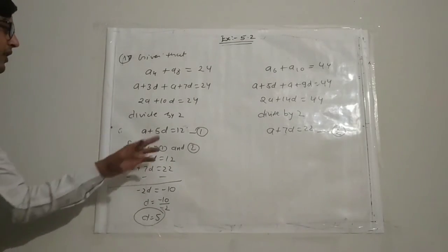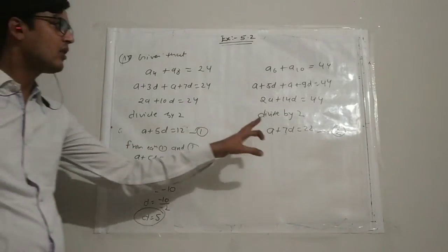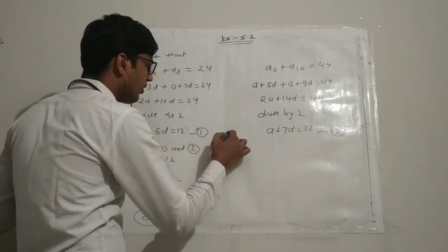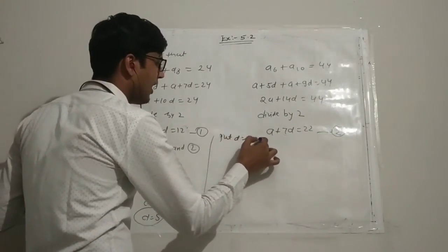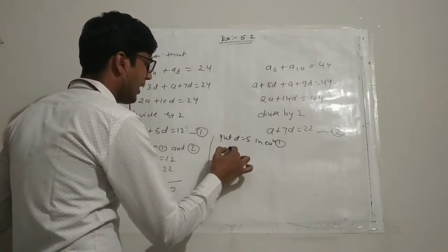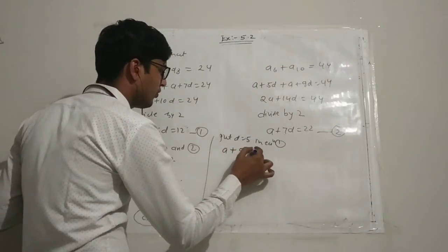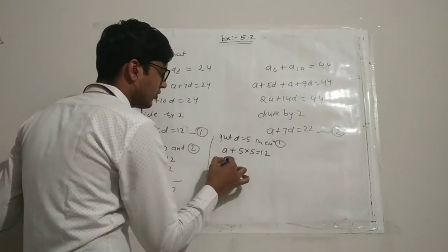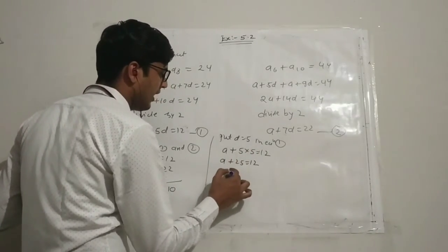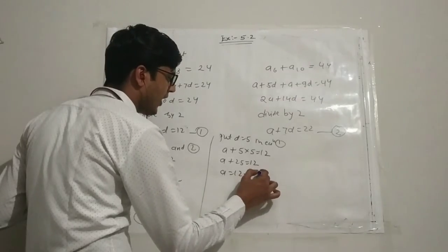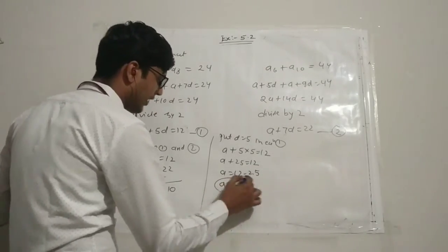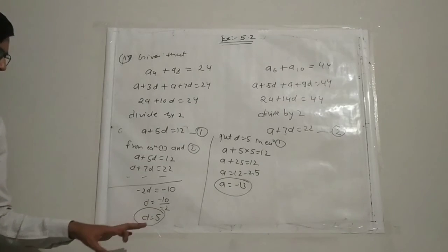Substituting d equals 5 into equation one: a plus 5 times 5 equals 12, so a plus 25 equals 12, giving a equals 12 minus 25, so a equals minus 13.